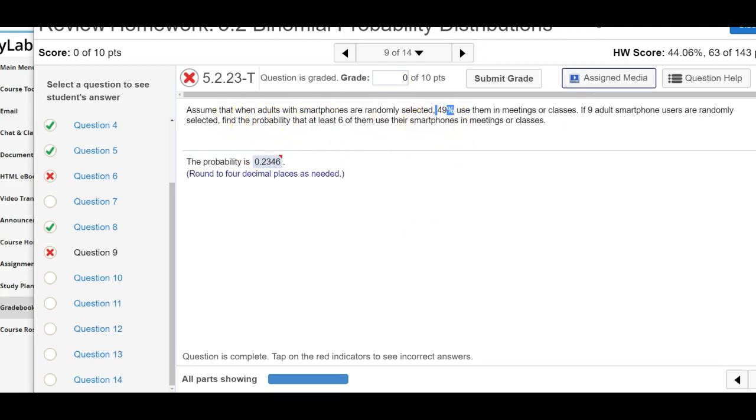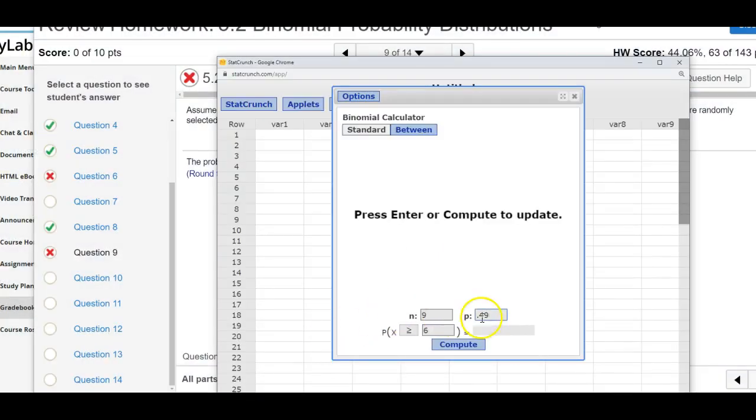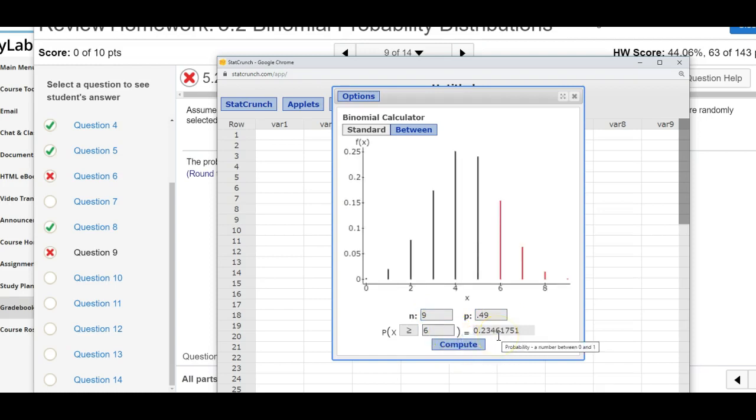So what this calculator is going to calculate here is compute. It's going to give us our answer and what it's doing is the probability at six plus the probability at seven plus the probability at eight plus the probability at nine.